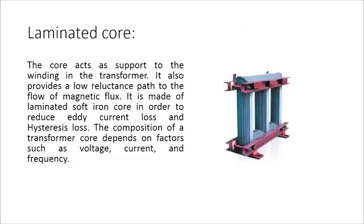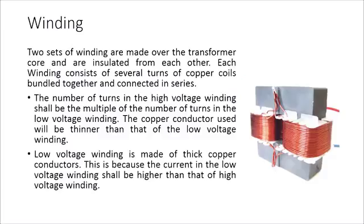The core acts as support to the winding in the transformer and provides a low reluctance path to the flow of magnetic flux. It is made of laminated soft iron core in order to reduce eddy current loss and hysteresis loss. The composition of a transformer core depends on factors such as voltage, current, and frequency.